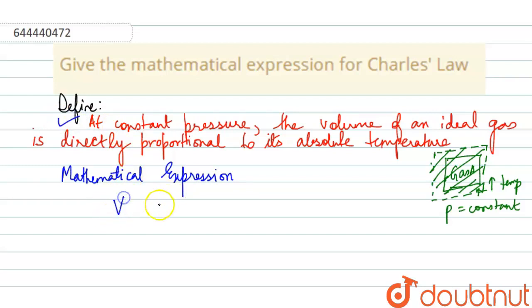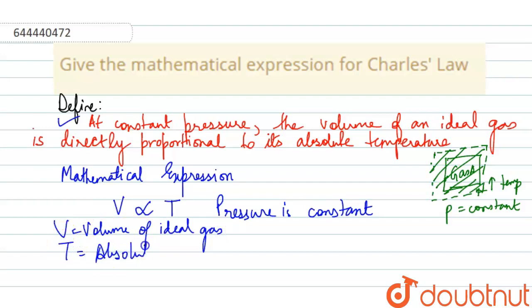That means, volume of the gas is directly proportional to the absolute temperature considering pressure is constant. You need to mention that V is the volume of ideal gas and T is the absolute temperature of the ideal gas.